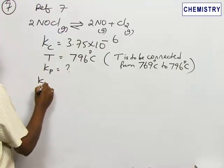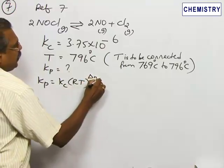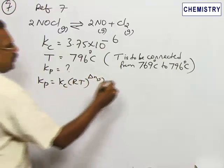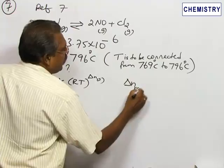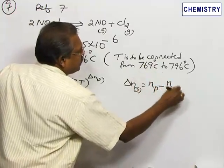Now KP = KC(RT)^ΔnG. So the ΔnG value is given by the number of moles of gaseous products minus the number of moles of gaseous reactants.